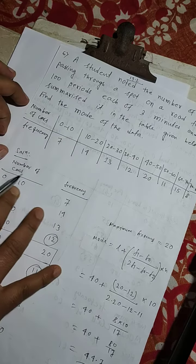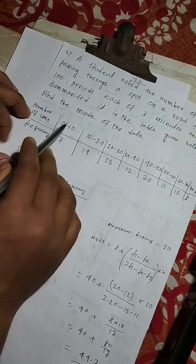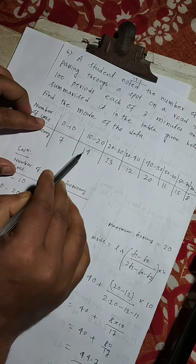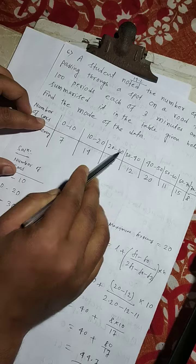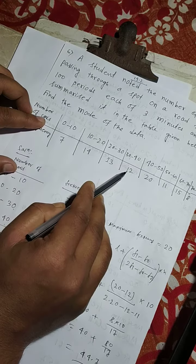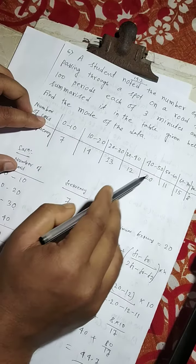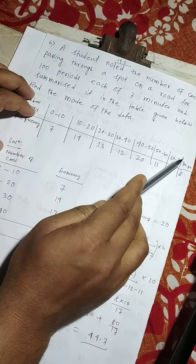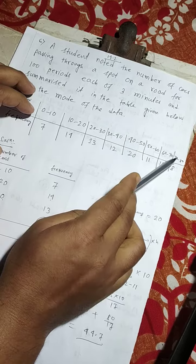Find the mode of the data. So, number of cars, frequency: 0 to 10 is 7, 10 to 20 is 14, 20 to 30 is 13, 30 to 40 is 12, 40 to 50 is 20, 50 to 60 is 11, 60 to 70 is 15, 70 to 80 is 8.